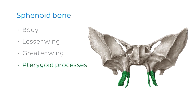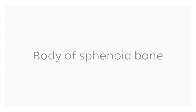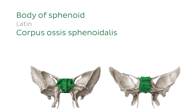Throughout this tutorial, we'll first look at the specific bony features on each of these parts of the sphenoid bone, and then look at these features in an image of the skull to see their relationship to other bones and features of the skull. So we're going to start by looking at the bony features of the body of the sphenoid bone. Here we see the body of the sphenoid bone from an anterior view on the left and from a posterior view on the right. The body is the most centrally positioned portion of the sphenoid bone.